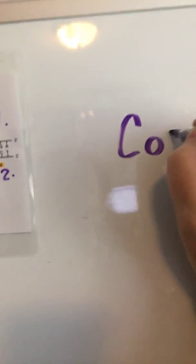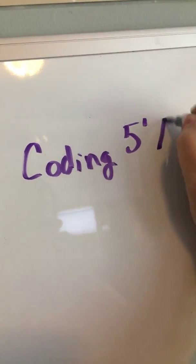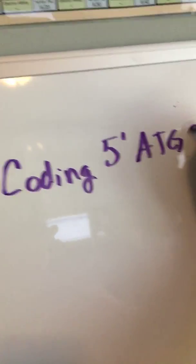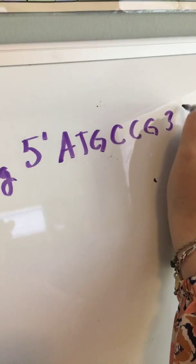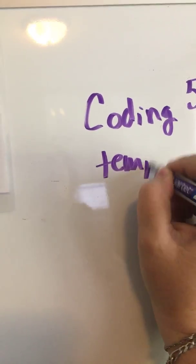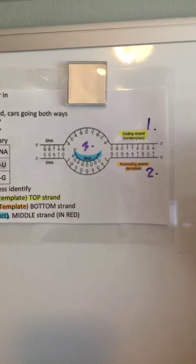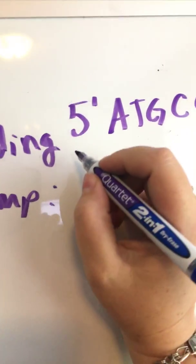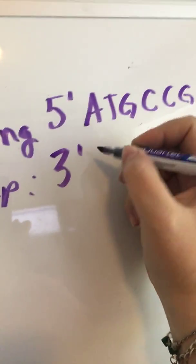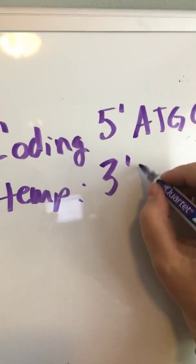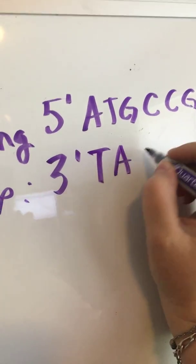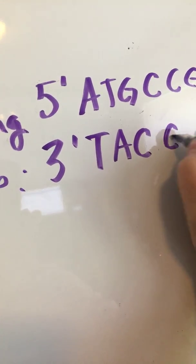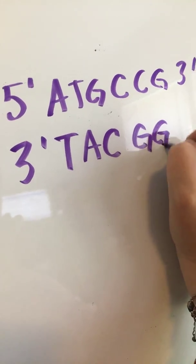If I have a question and it says you have a coding sequence of 5' ATGCCG 3', take that to template. Coding here is step one and our template is step two, so that means we're just going to play one round of the matching game. Five matches with three, A matches with T, T matches with A, G matches with C, C matches with G, and so on to 5' prime.